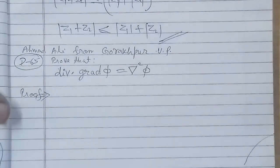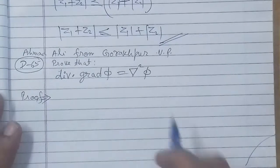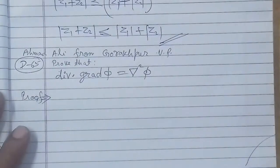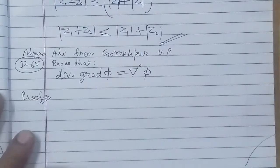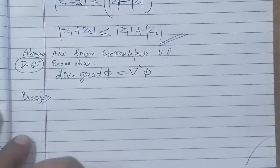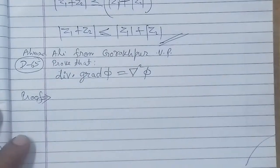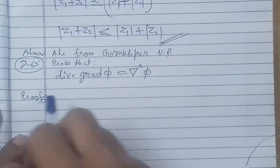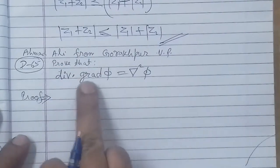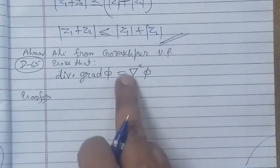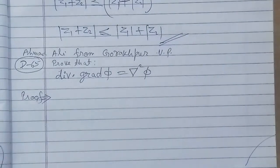Bismillahirrahmanirrahim. On the demand of Ahmad Ali from Kodakpur UP, the problem is from vector analysis chapter or vector calculus. The chapter here is operations on operators. This I have to prove: prove that divergence of gradient phi is equal to del square phi.